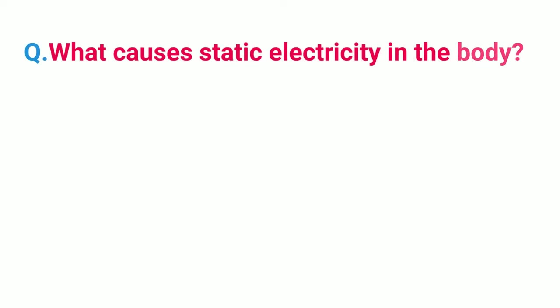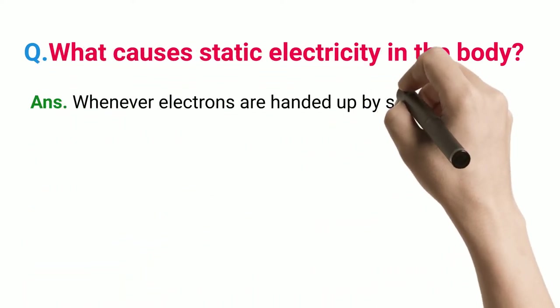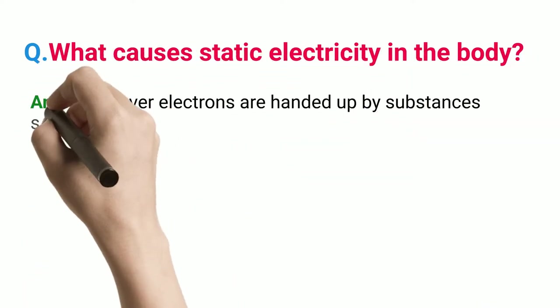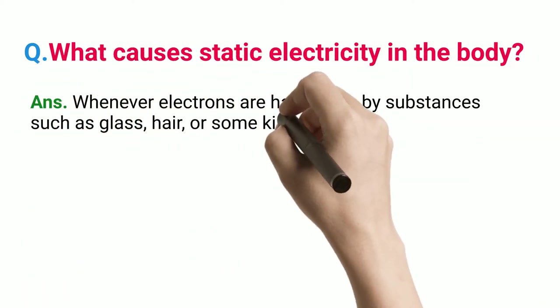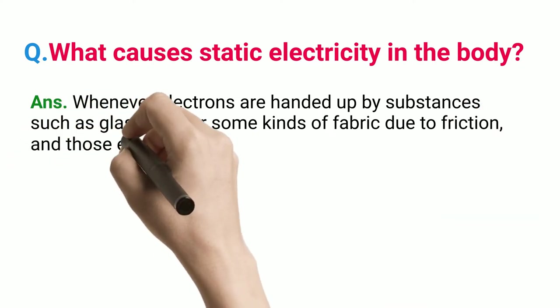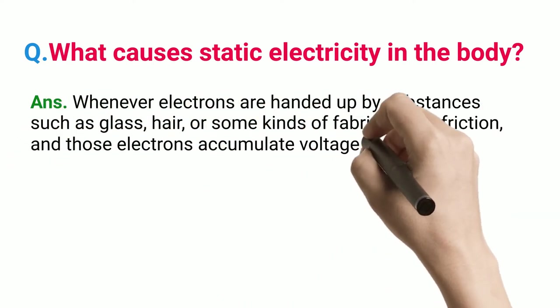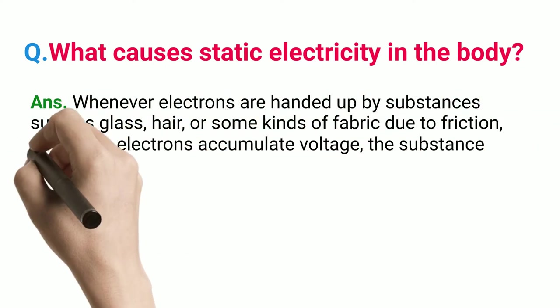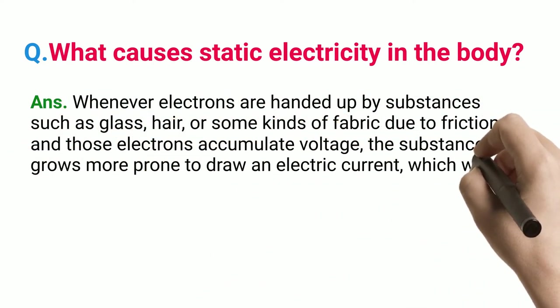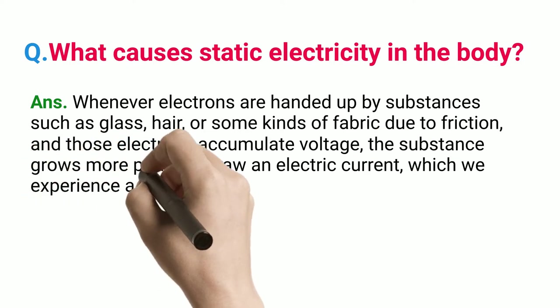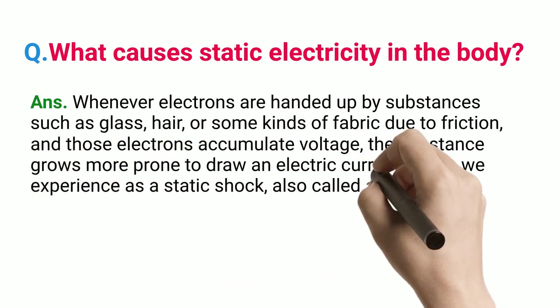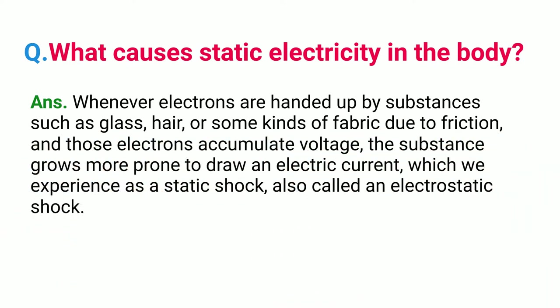What causes static electricity in the body? Whenever electrons are handed up by substances such as glass, hair, or some kinds of fabric due to friction, and those electrons accumulate voltage, the substance grows more prone to draw an electric current, which we experience as a static shock, also called an electrostatic shock.